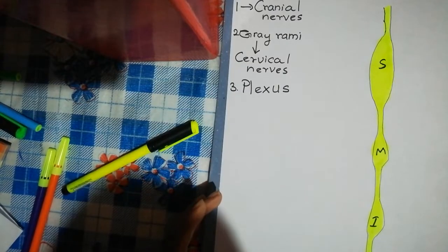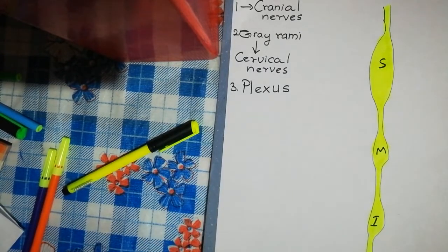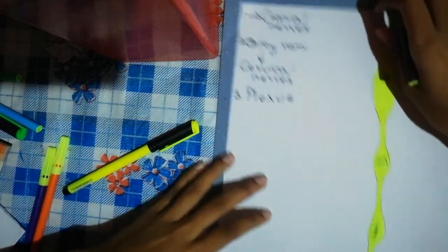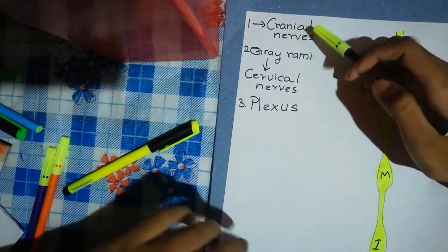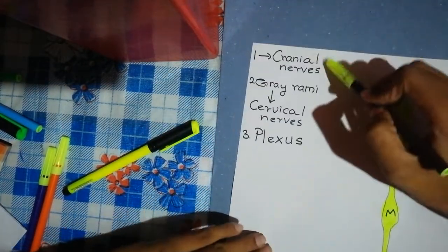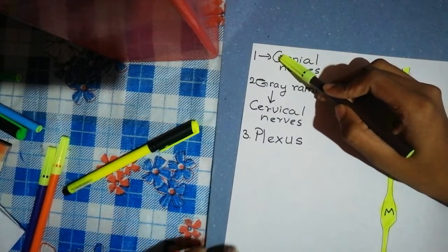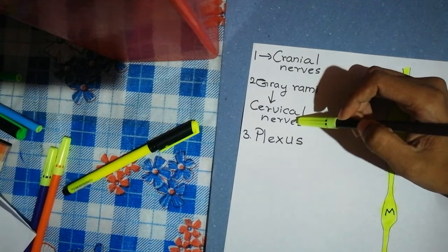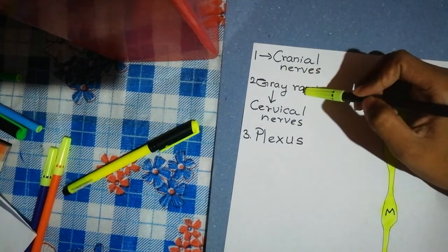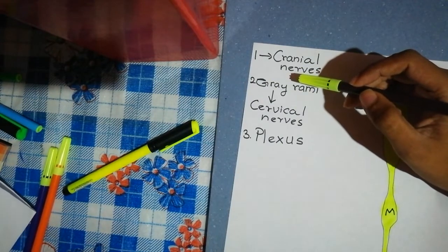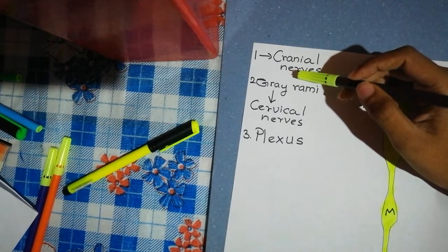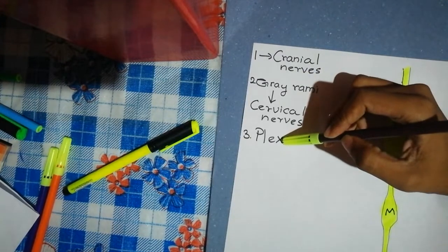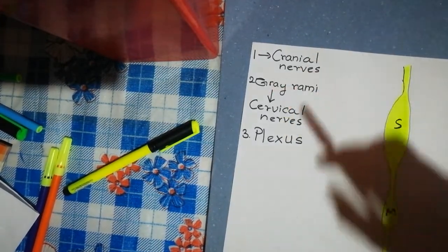Now let's look at the branches of the cervical sympathetic trunk. It helps to remember them by their target locations: first, branches to cranial nerves; second, branches to cervical nerves via gray rami communicans to the ventral rami; and third, plexuses formed around branches of the major arteries.